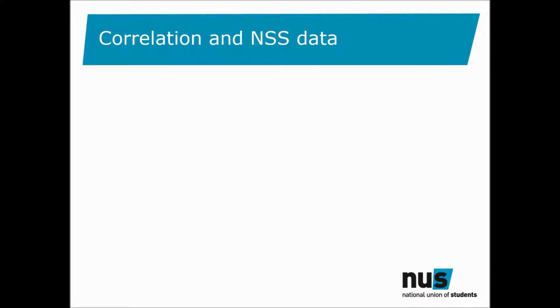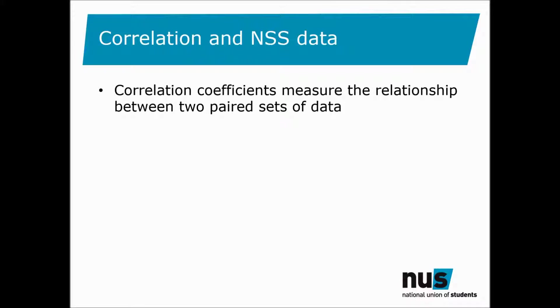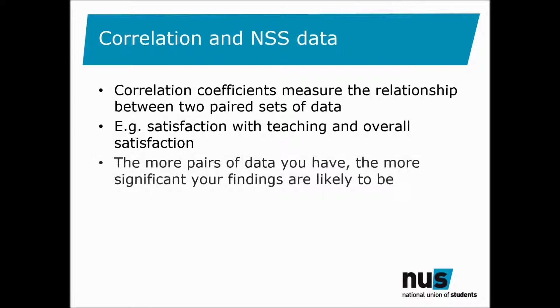Correlations are useful to you as someone analyzing National Student Survey data, because it's a numerically and statistically valid way to measure the relationship between two sets of data, such as satisfaction with teaching and overall satisfaction. The more pairs of data you have, the more significant your findings are likely to be. This is why we normally suggest taking data from your course level spreadsheet. You might have four faculties or 15 departments, but perhaps hundreds of courses.